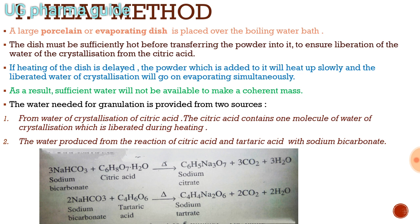The dish must be hot to ensure liberation of the water of crystallization from the citric acid. If heating of the dish is delayed, the powder added to it heats up slowly and the liberated water of crystallization will evaporate simultaneously. As a result, sufficient water will not be available to make a coherent mass.